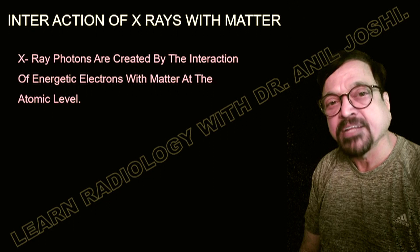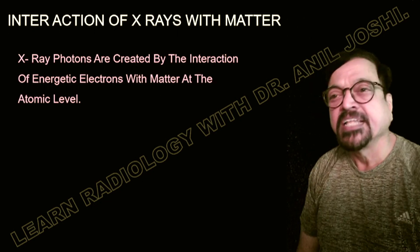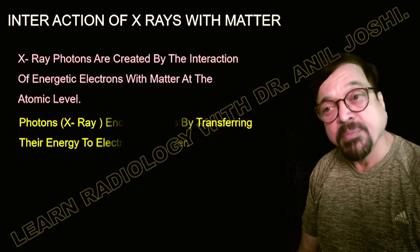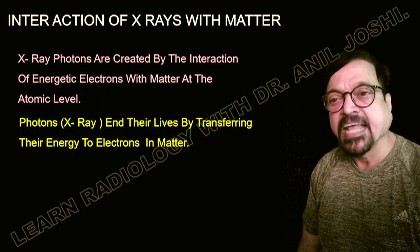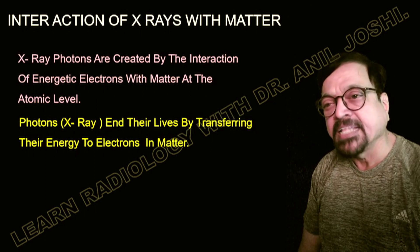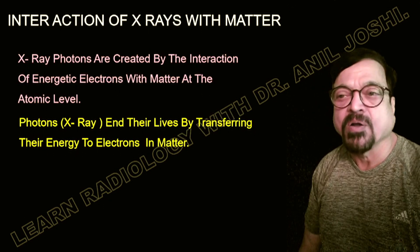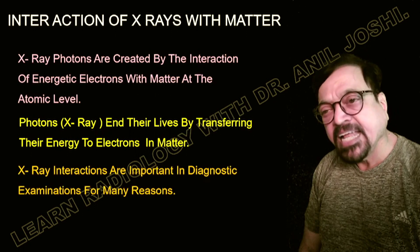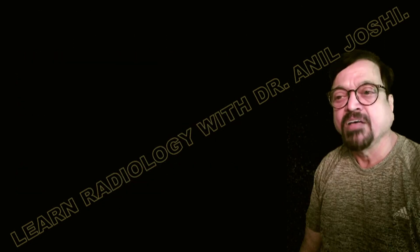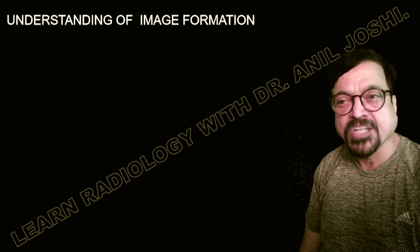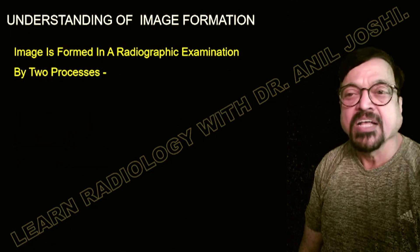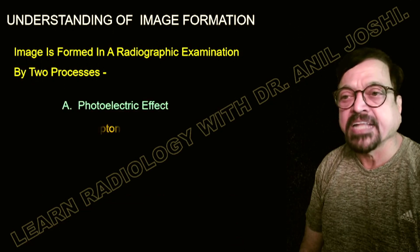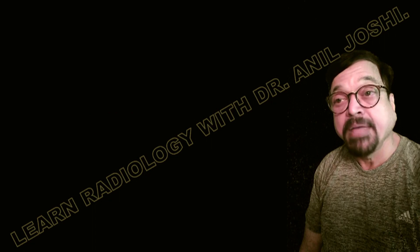Today's topic is the interaction of x-rays with matter. Understanding it helps us know radiation effects, radiation protection, and how to design a radiography department. X-ray photons are created by the interaction of energetic electrons with matter at the atomic level. Photons — that is, x-rays — end their life by transferring their energy to the electrons in the matter, depositing that energy into the electrons. X-ray interactions are important in diagnostic examination, and image formation is covered here: images form via the photoelectric effect and Compton scatter.